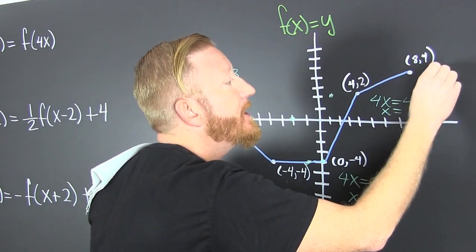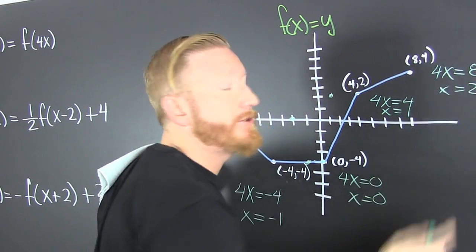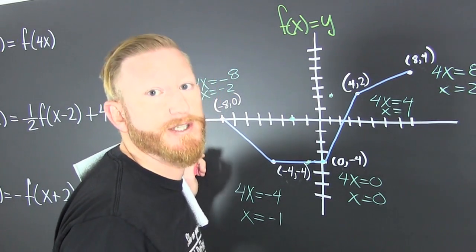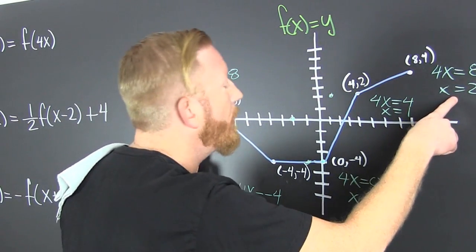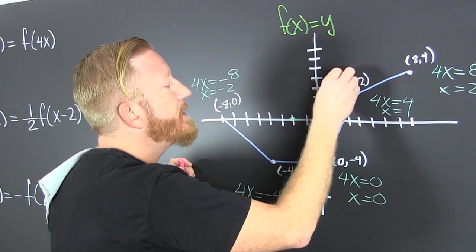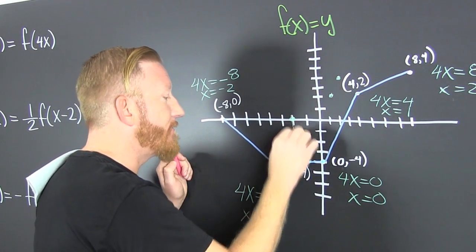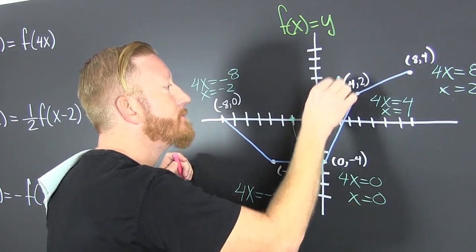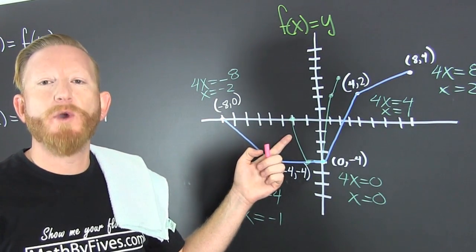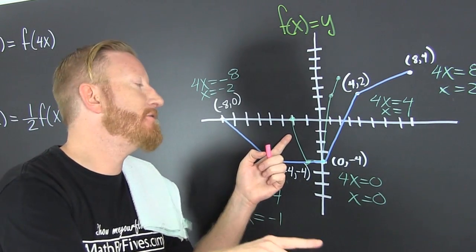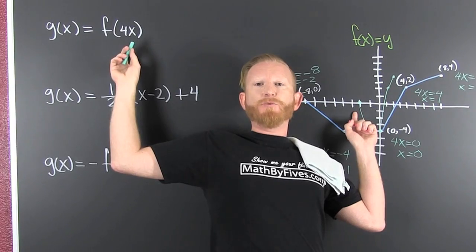Now I'm looking here. 4x is equal to 8. And then x turns out to be 2. We're finding our new points with this function notation. We're in the interior of the function, so we're looking at x. And here I know x is 2. So 2, 4 is on there. And then we can make that graph. That's what g of x looks like when g of x is equal to f of 4x.